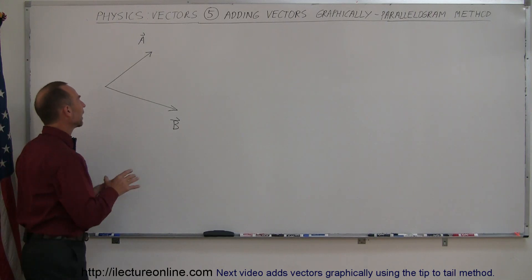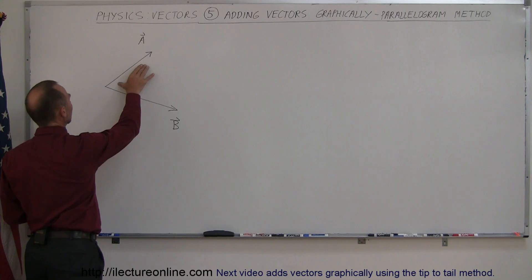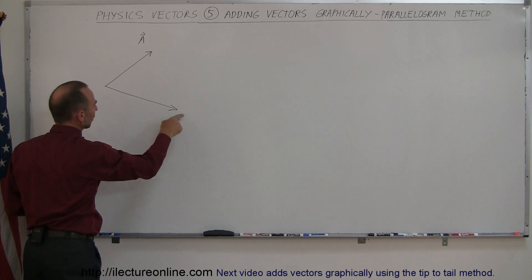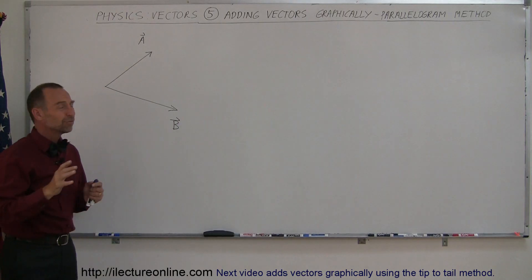So what you need to do is recognize you have two vectors. You have vector A which starts here, points up in that direction. Vector B which starts here and points in that direction. Again, you can move these vectors around.